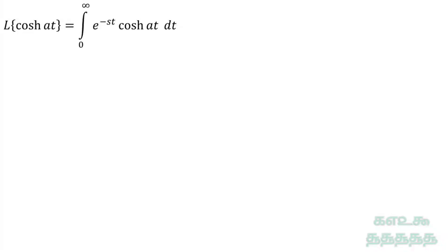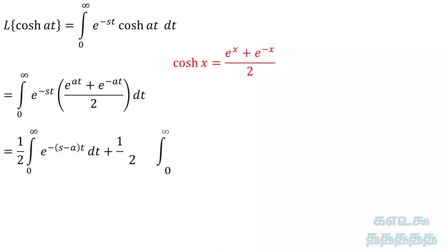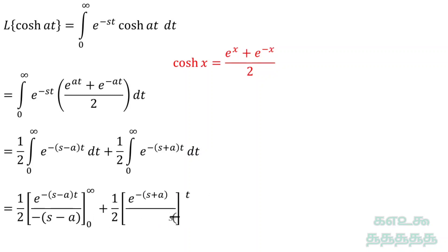We know that cosh(x) is equal to (e to the power x plus e to the power minus x) divided by 2. Substituting in the integral equation and simplifying, then integrating with respect to dt with limits 0 to infinity.